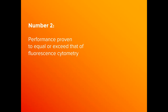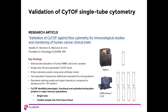The second reason is that mass cytometry has performance equal to or better than fluorescent cytometry. Gadela et al. compared a single-tube, 40-marker mass cytometry panel side by side with a multi-tube, eight-color flow cytometry workflow on human PBMCs and dissociated tumor. Key findings show statistical congruence in populations using both approaches, comparable staining quality, and the ability of mass cytometry to identify phenotypic, functional, and exhaustion markers in a unified manner as an advantage over multi-tube workflows.